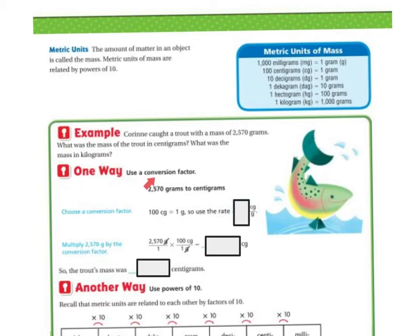One way is to use a conversion factor. 2,570 grams to centigrams. If I choose a conversion factor, 100 centigrams equals 1 gram. It's right there in my chart. So I could use the rate 100 to 1, and then I would multiply the 2,570 by that, and so I would get 257,000.